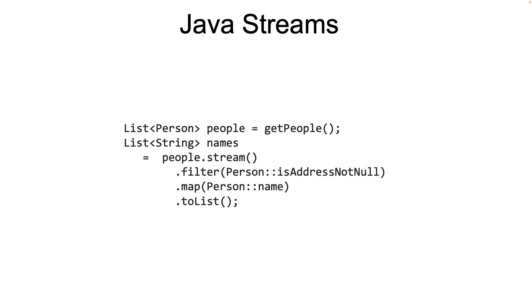We talked about the terminal operation. One of the examples of a terminal operation is reduce, which is represented by the reduce methods in the stream interface. In plain English, the reduce method combines the sequence of elements from the stream to a single type, based on a few functions that we provide as parameters. In fact, there are three overloaded methods for reduce in the stream's interface, and we will take a look at each one of them.